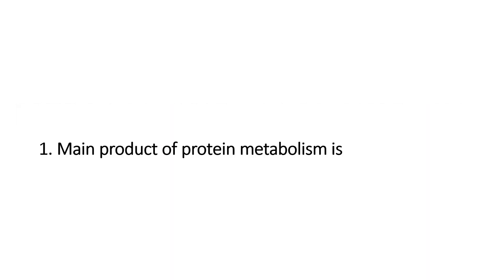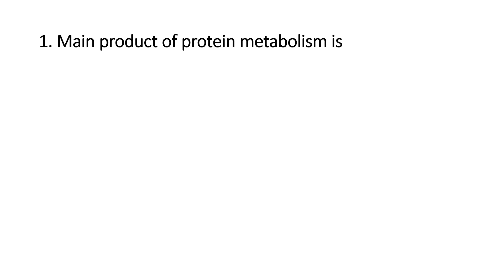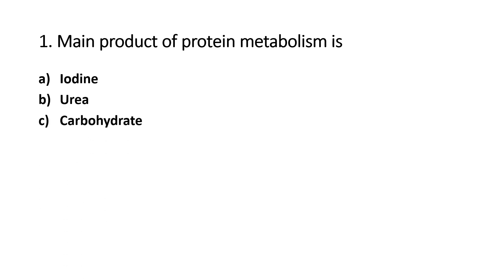The main product of protein metabolism is: Option A - Iodine, Option B - Urea, Option C - Carbohydrate, Option D - Glycogen. The right answer is Option B, Urea. The final product of protein metabolism in the body is Urea. The nitrogenous waste in urine is Urea.